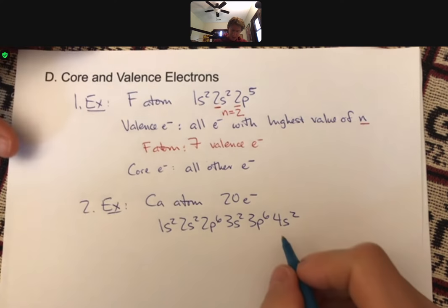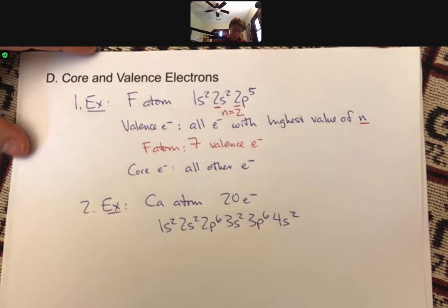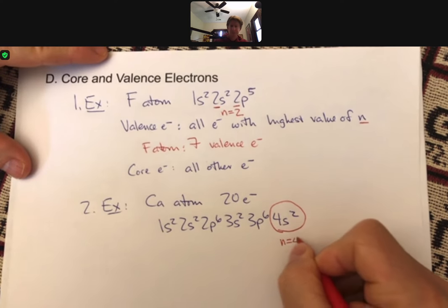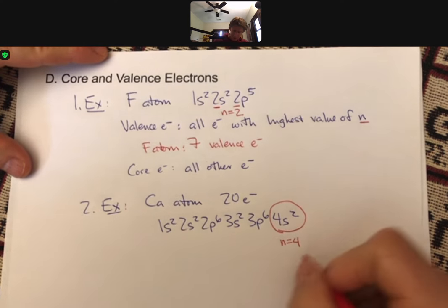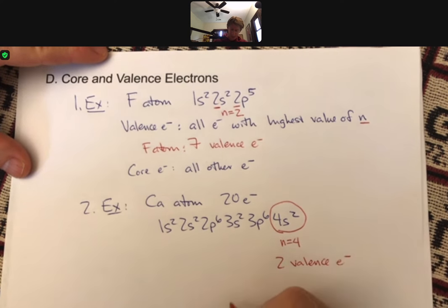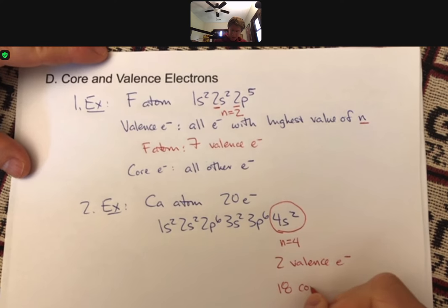And the highest value of n is n equals 4, and calcium atom has two valence electrons and 18 core electrons.